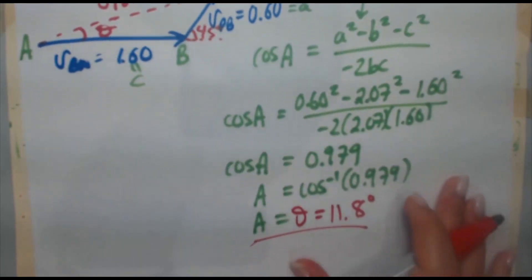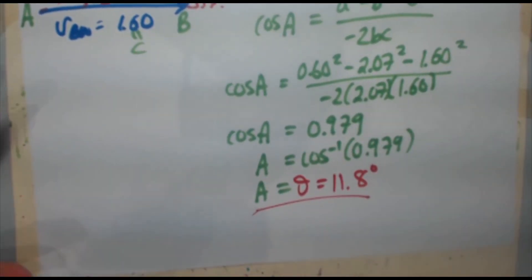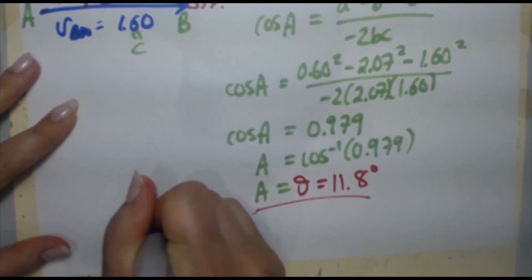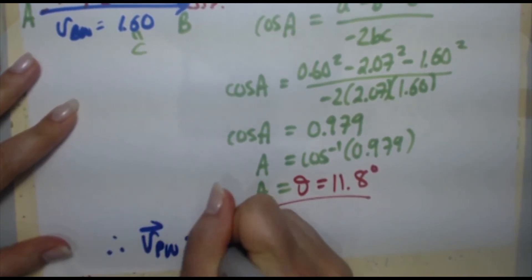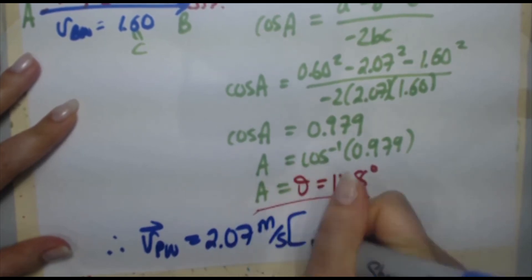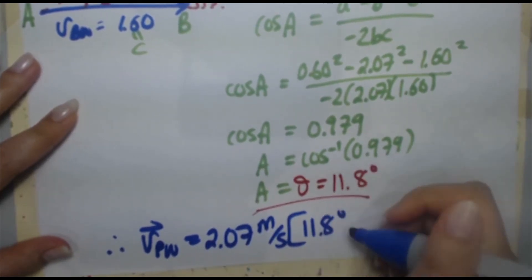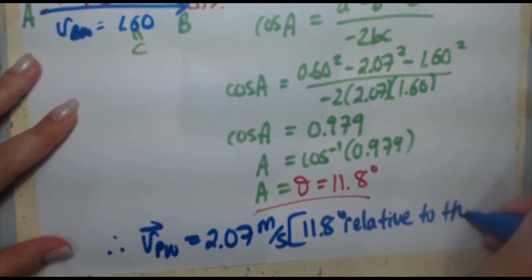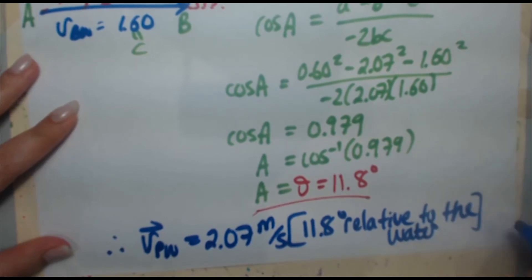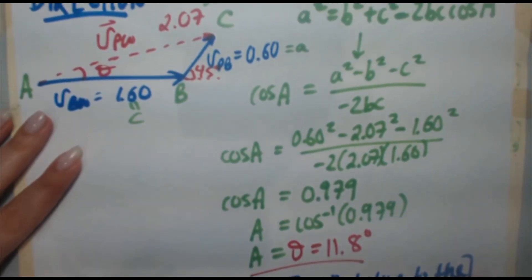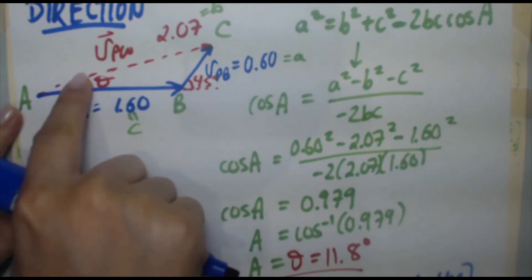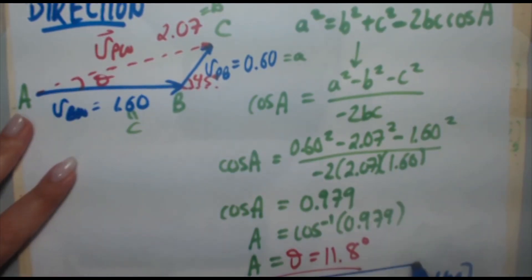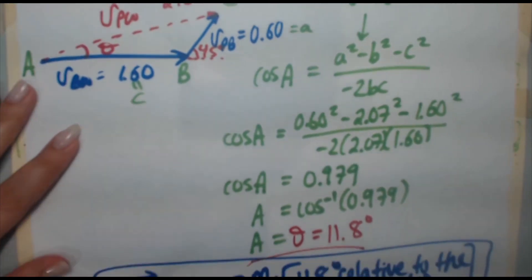We've got our magnitude of 2.07 meters per second and our direction of 11.8 degrees. Therefore, the velocity of the passenger relative to the water, V-P-W, is 2.07 meters per second at 11.8 degrees relative to the water. No further adjustment is needed because this angle is relative to the horizontal direction — the direction the boat is moving in the water.